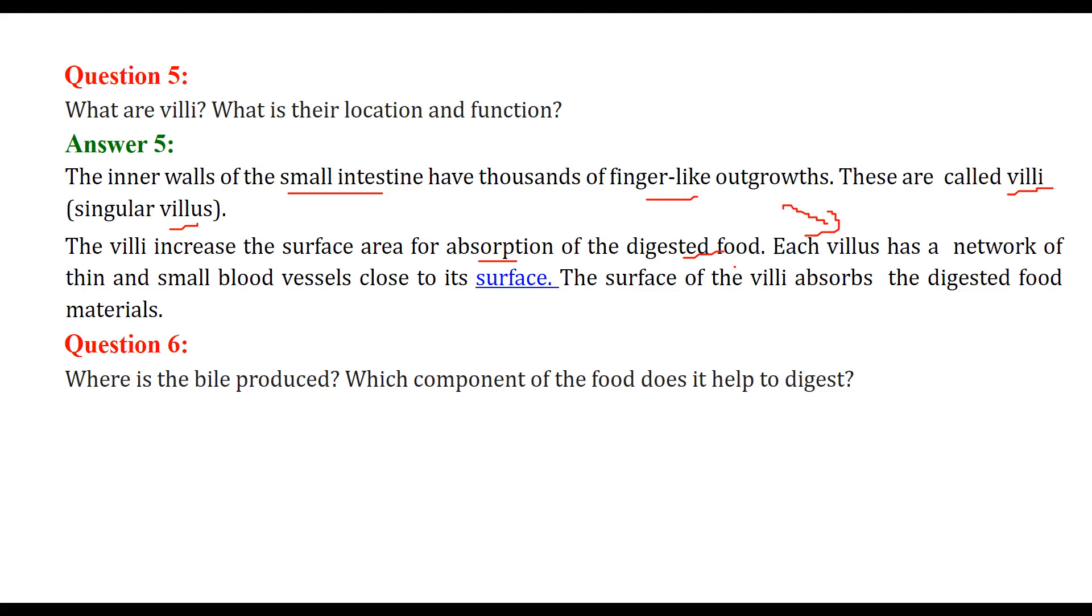This villi increases the surface area of absorption of digested food. Each villus has a network of thin and small blood vessels which is close to its surface. The surface of villi absorbs the digested food material and this is how it becomes very important as far as digestion is concerned.